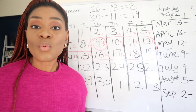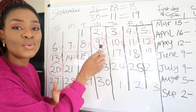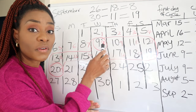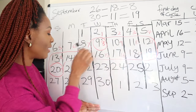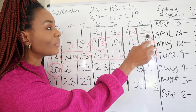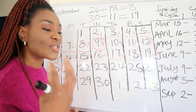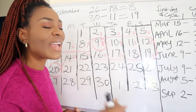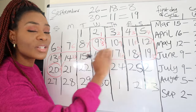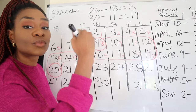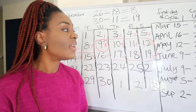Once the egg is released it travels to the fallopian tube and waits for sperm — for about 12 to 24 hours. The good news is sperm can stay in a woman's body for 3 to 5 days. So if you have sex on day 8 and ovulate on day 11, the sperm is already there to fertilize the egg. That is how the science works, so try multiple times during the fertile window to increase your chances.